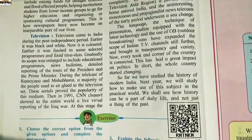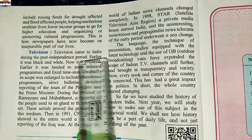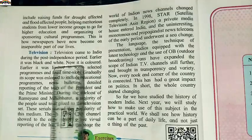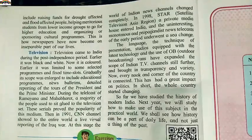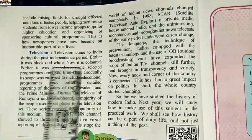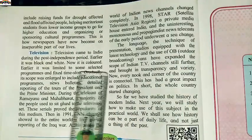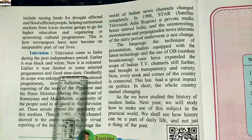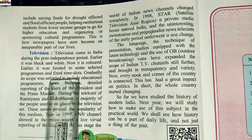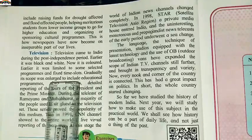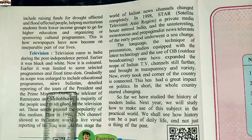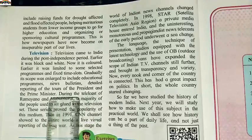Television came to India during the post-independence period. Earlier it was black and white and limited to some selected programs and fixed time slots. Gradually its scope was enlarged to include educational programs, news bulletins, and detailed reporting of the tours of the President and Prime Minister.